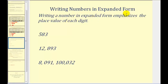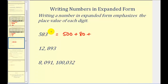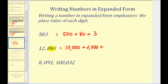Now sometimes you'll be asked to write numbers in expanded form, and writing a number in expanded form is a way to emphasize the place value of each digit. For example, this five represents five hundred, this eight represents eight tens or eighty, and this three represents three ones or three. This is called expanded form of five hundred eighty-three. So for twelve thousand eight hundred ninety-three: this one represents one ten thousand, plus two one thousands or two thousand, plus eight hundred, plus this nine represents ninety, and the three represents three.